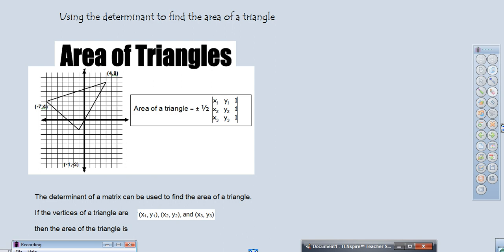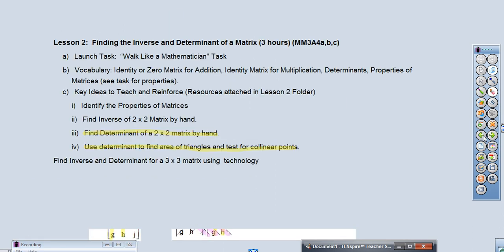Alright, this is a video on finding the area of a triangle using the determinant. Let's go back to our first page here. So what we're going to be looking at today is our objective: to find the determinant of a 2x2, review that, and use that determinant to find the area of a triangle so that we can then test collinear points.